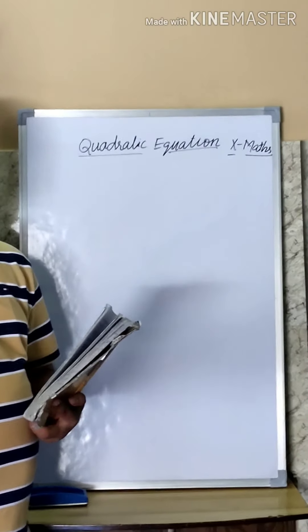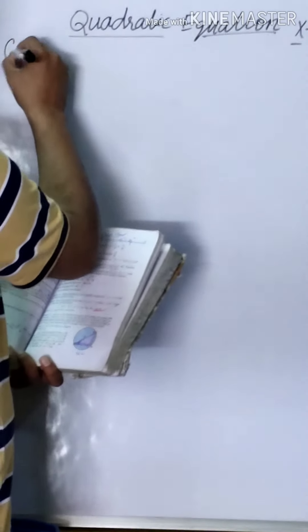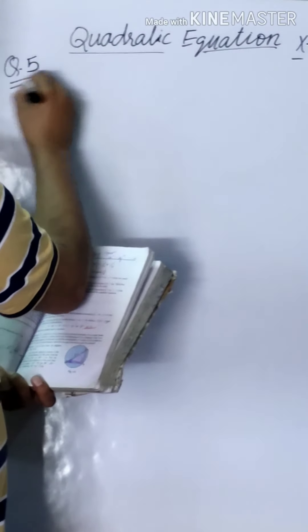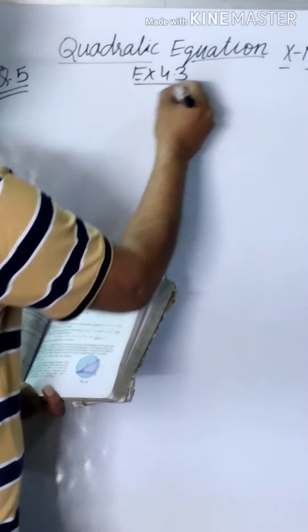Hello friends, how are you? Last time we did question number 4 from chapter 4 on quadratic equations. The standard form is ax² + bx + c = 0. Now we are starting question number 5 from exercise 4.3.